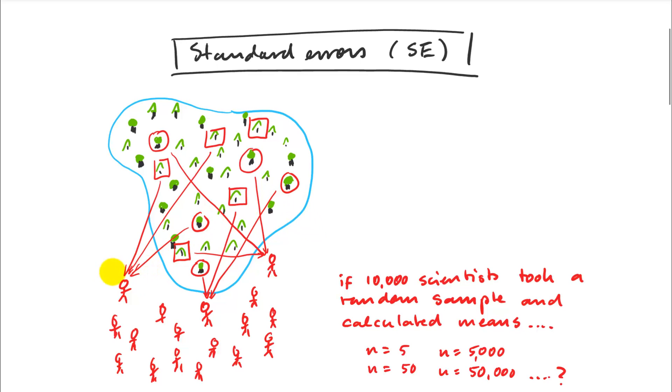So we could imagine that a study is done by one scientist, and you get a particular result, and then somebody else disagrees and looks at this again. Or we can think about, just as we have in the previous video, of 10,000 scientists doing this random sampling and calculating the means.